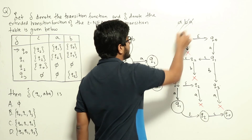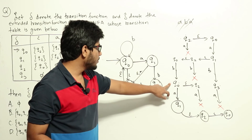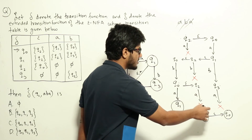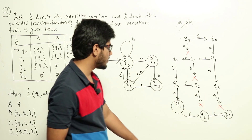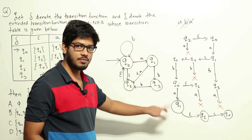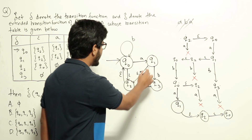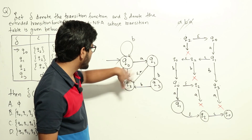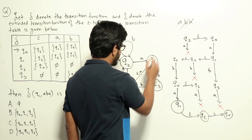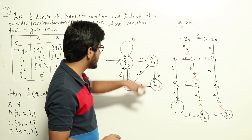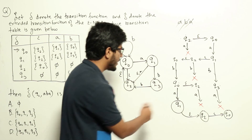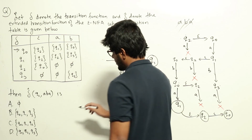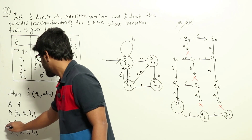Now we read the final character a. From q0 on a we go to q1. From q2 on a there is no transition — closed. From q3 on a there is no transition — closed. So we have q1. Now including epsilon transitions: from q1 on epsilon we go to q2, and from q2 on epsilon we go to q0. No more epsilon transitions. So starting in state q2 and reading string aBA, we can finally end up in states q1, q2, and q0. Looking at the options, that matches option C: {q0, q1, q2}.